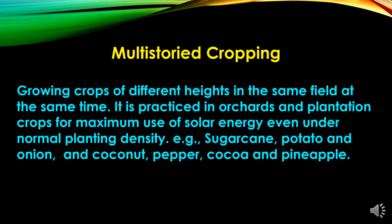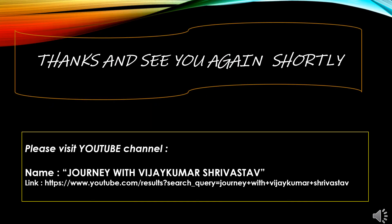Multi-storied cropping is growing crops of different heights in the same field at the same time. It is practiced in orchards and plantation crops for maximum use of solar energy even under normal planting density, like growing sugarcane with potato and onion, and growing coconut, pepper, cocoa, and pineapple. This was all about intensive cropping; my presentation ends here.